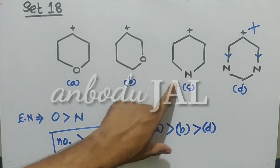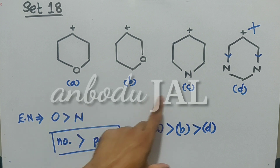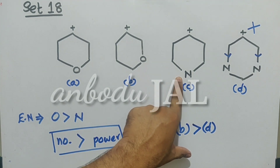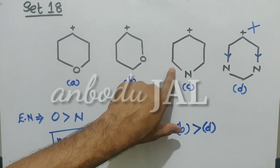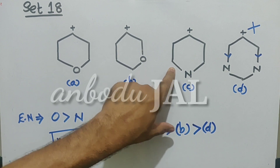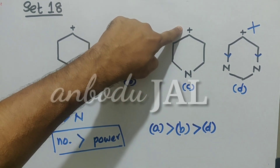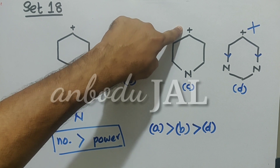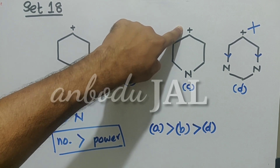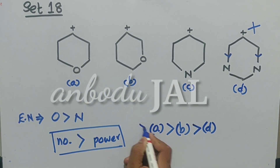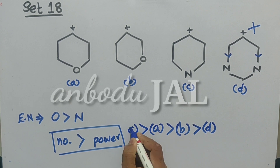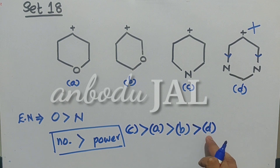Now considering species C: the electron withdrawing power of nitrogen is less than that of oxygen, so electron withdrawal will be very minimal. That is why the electron density on the positively charged carbon will be maximum, meaning positive charge will be minimum, and this species is most stable. So the order is C more stable than A, which is more stable than B, which is more stable than D.